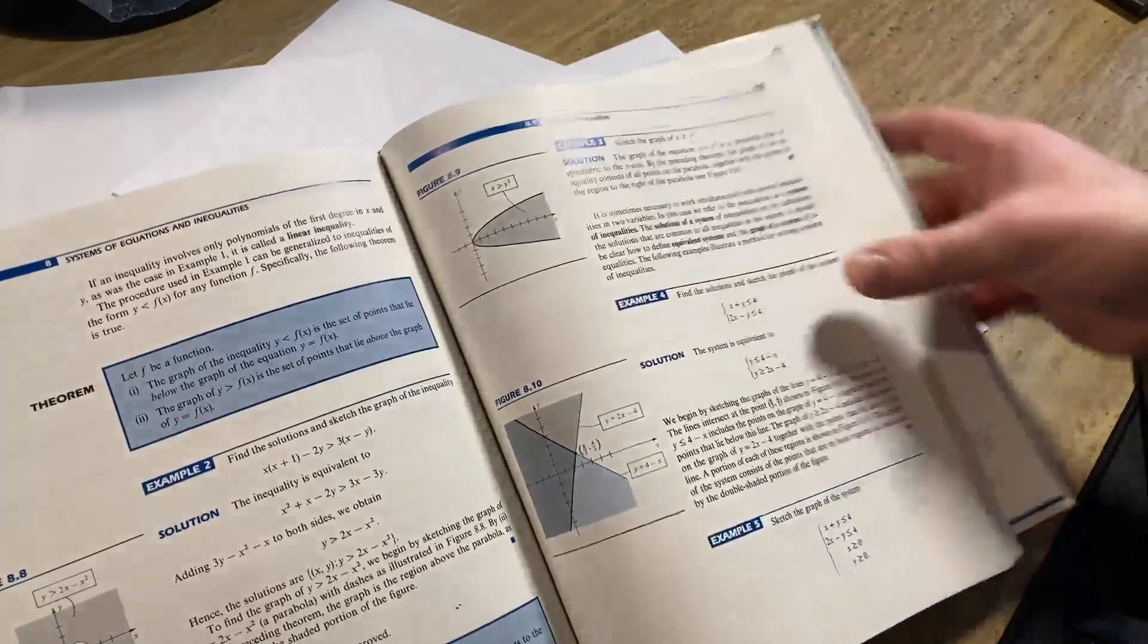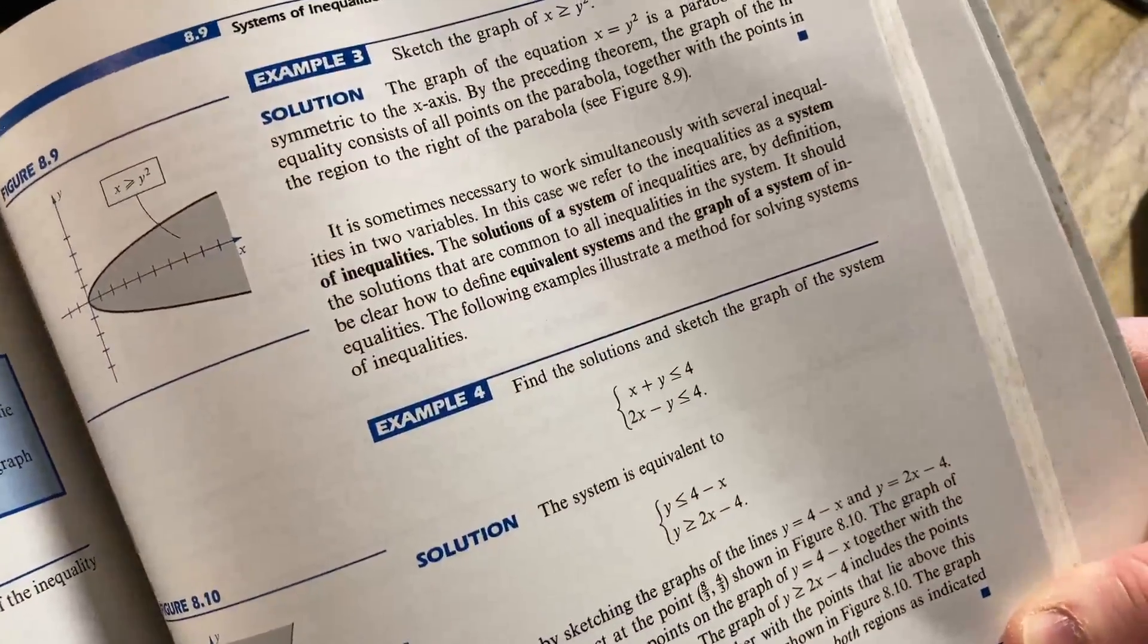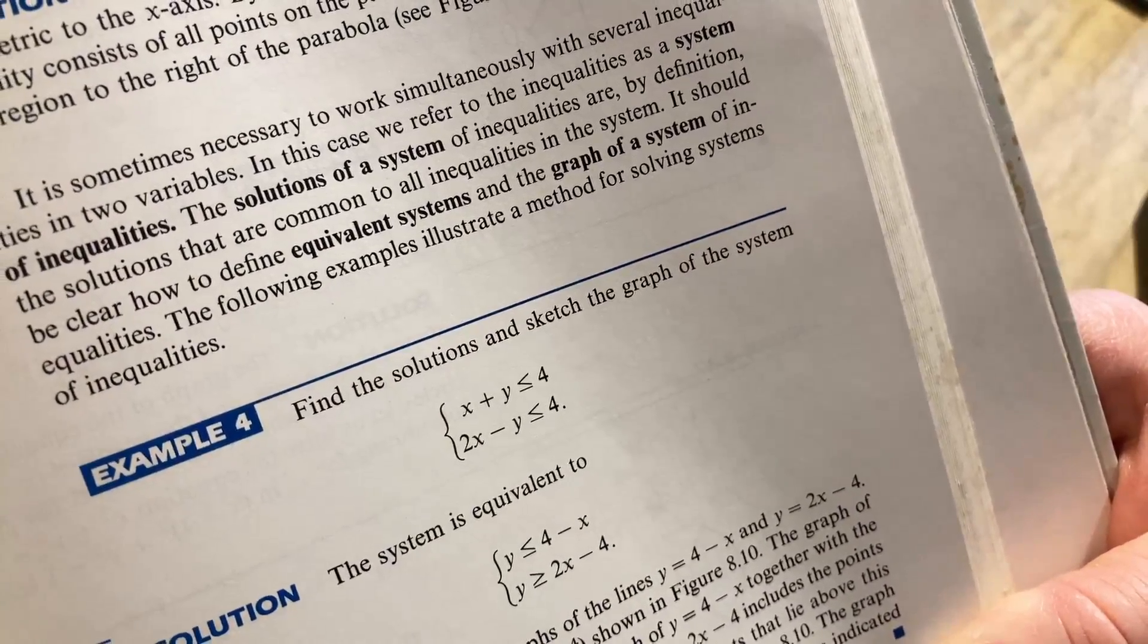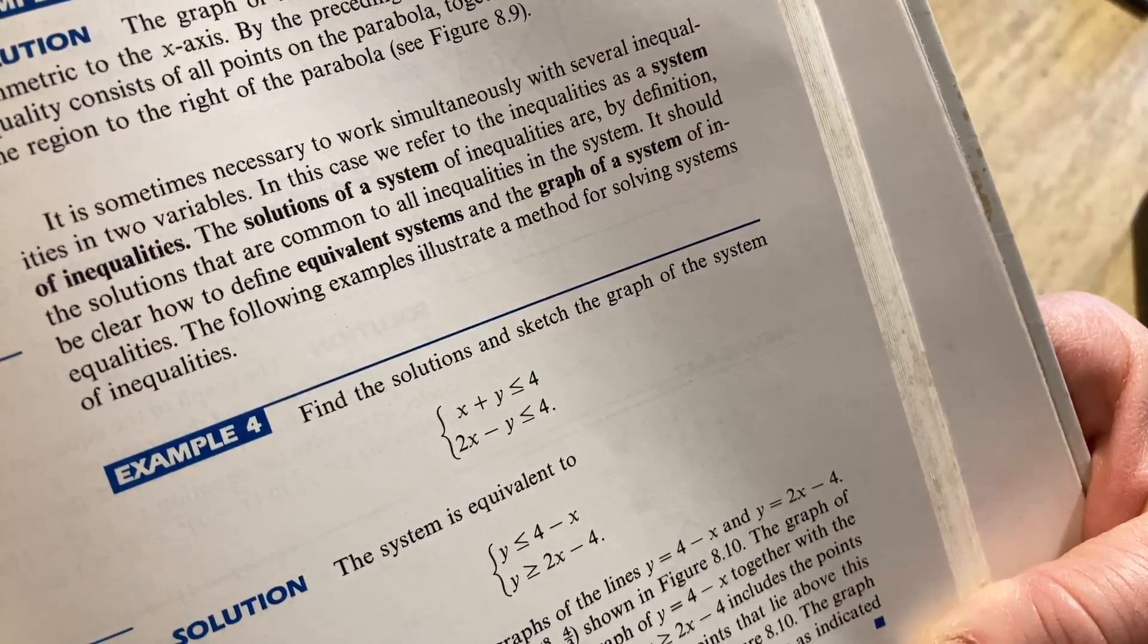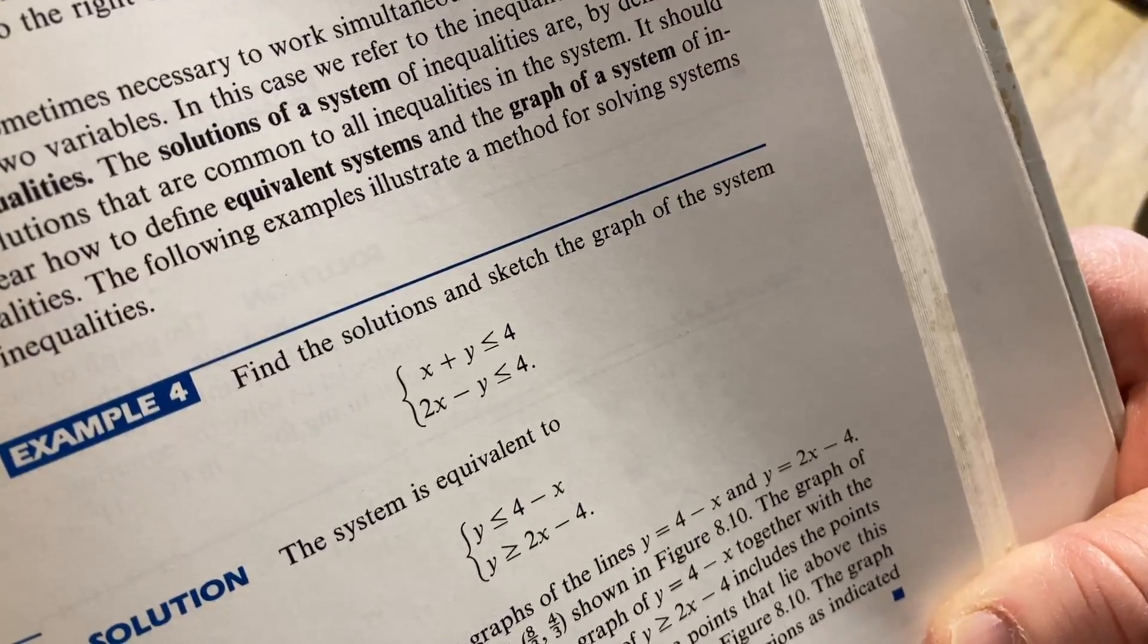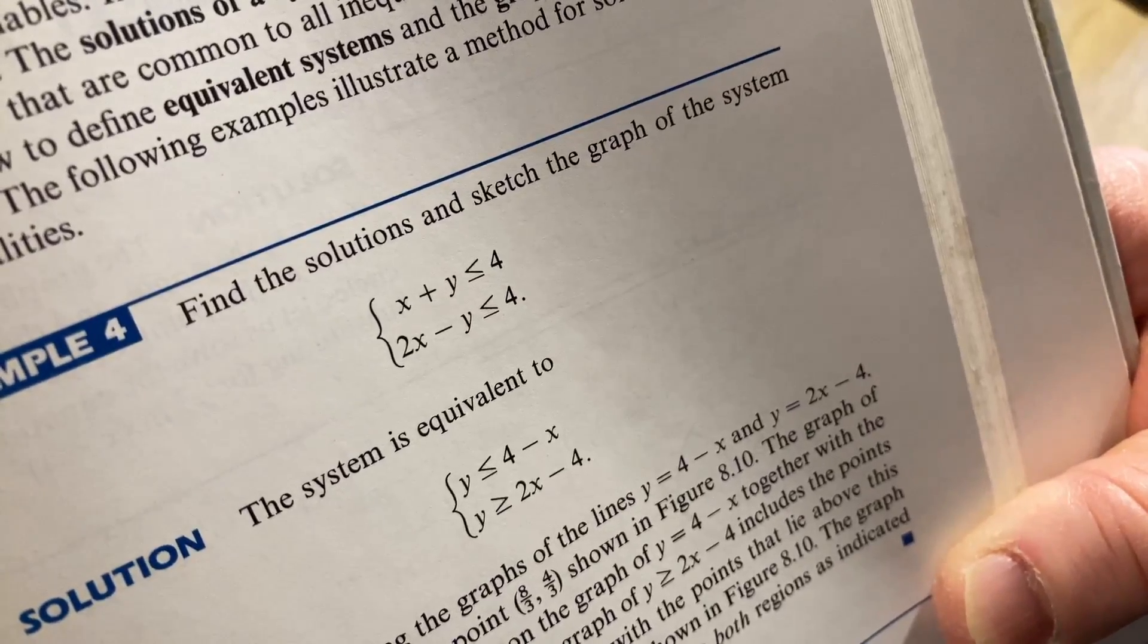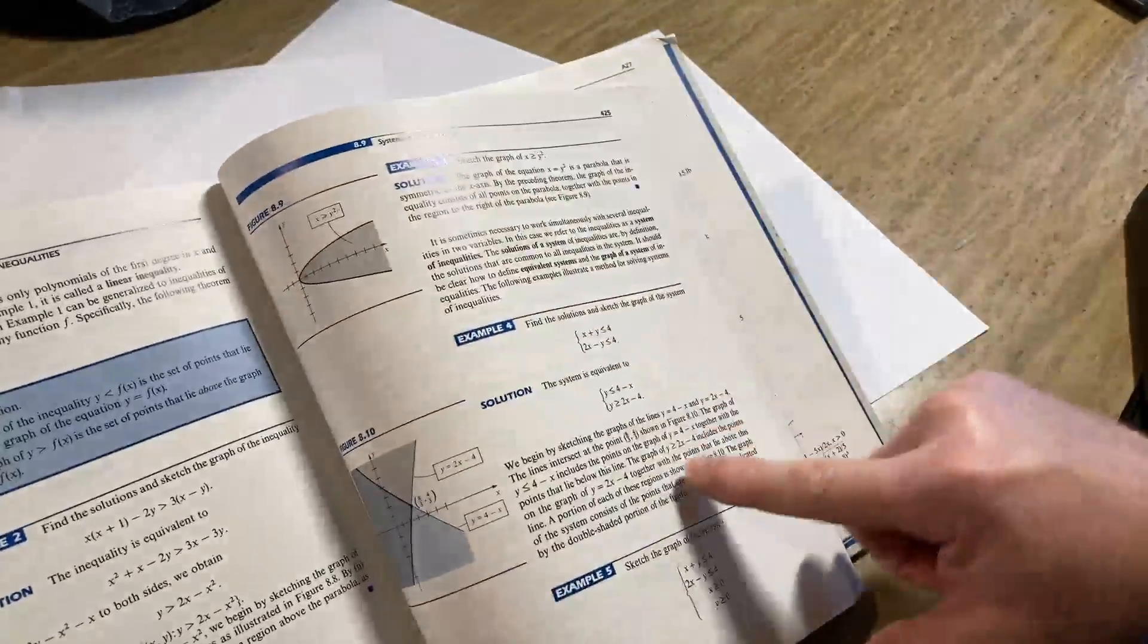See if they have some harder examples. Here we go, Example 4. Find the solutions and sketch the graph of the system: x plus y less than or equal to 4, 2x minus y less than or equal to 4. So we have two lines and it looks like they're solving for y first. That's a good way to do it because then you can graph the line 4 minus x and you can shade below it because it's less than. And then you graph the line 2x minus 4 and you shade above it because it's greater than.